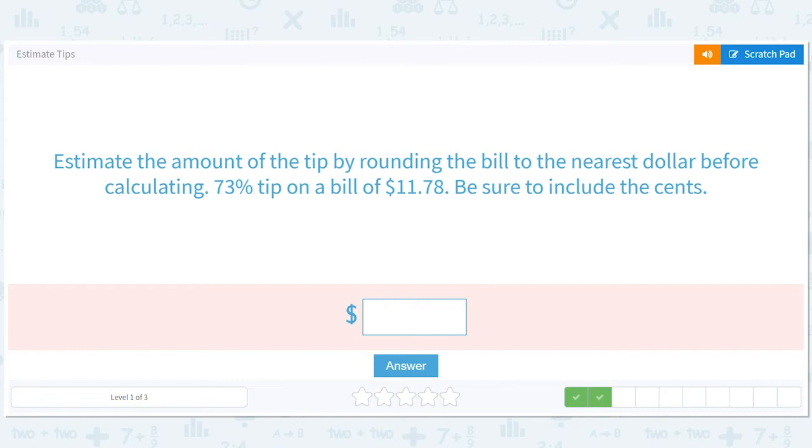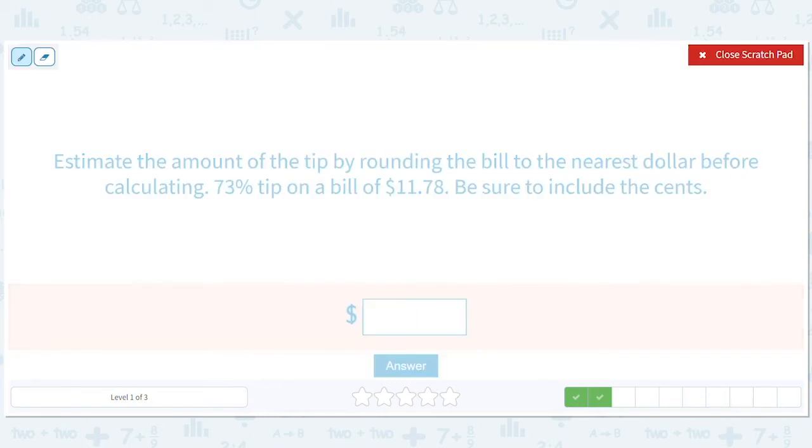Estimate the amount of the tip by rounding the bill to the nearest dollar before calculating. 73% on a bill of $11.78. Now, that's a little bit too generous, but we'll go with it. We appreciate the spirit here. So, this is $12.